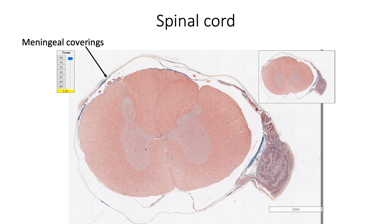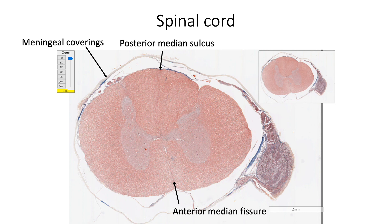Its external surface shows various sulci. Anteriorly, the anterior median fissure separates the right and left halves of the spinal cord. Posteriorly, there is a shallow posterior median sulcus, and dorsolateral sulci mark the site of entry of dorsal roots.